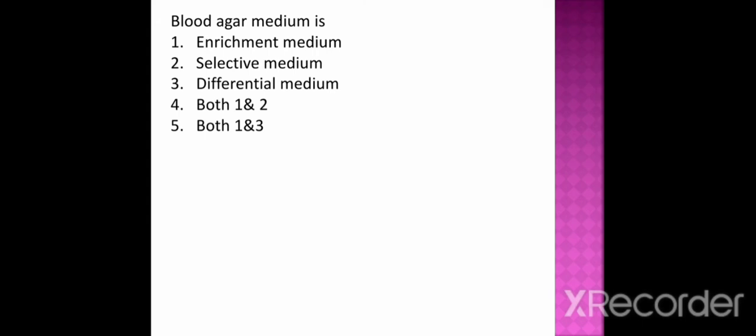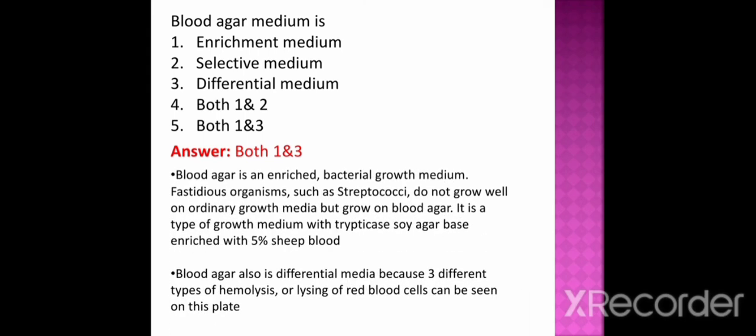Blood agar medium is option 1 enrichment medium, option 2 selective medium, option 3 differential medium, option 4 both 1 and 2, option 5 both 1 and 3. Blood agar is a medium that is both an enrichment medium and a differential medium. Blood agar is an enriched bacterial growth medium; fastidious organisms such as streptococci do not grow well on ordinary growth media but grow on blood agar. It is a type of growth medium with trypticase soy agar base enriched with 5% sheep blood. Blood agar is also a differential medium because three different types of hemolysis, or lysing of red blood cells, can be seen on this plate.